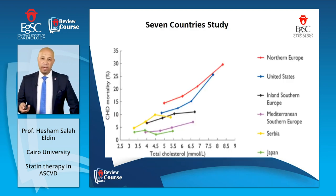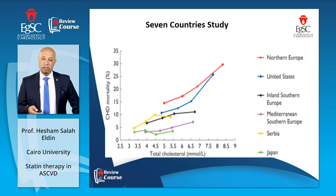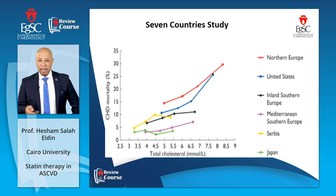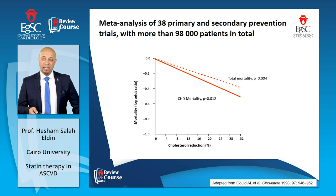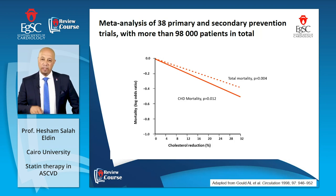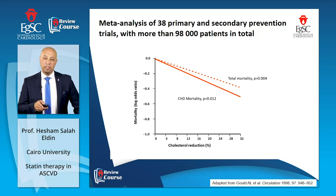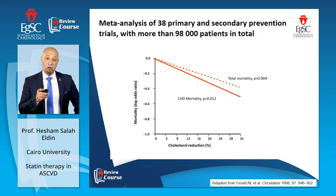In spite of knowing that cholesterol is implicated in coronary heart disease mortality — and data as old as the Seven Countries Studies showed a clear relationship between cholesterol levels and coronary heart disease mortality — good news came from a meta-analysis of 38 primary and secondary prevention trials with more than 98,000 patients. It showed clearly that lowering cholesterol was quite impressive in reducing such mortality.